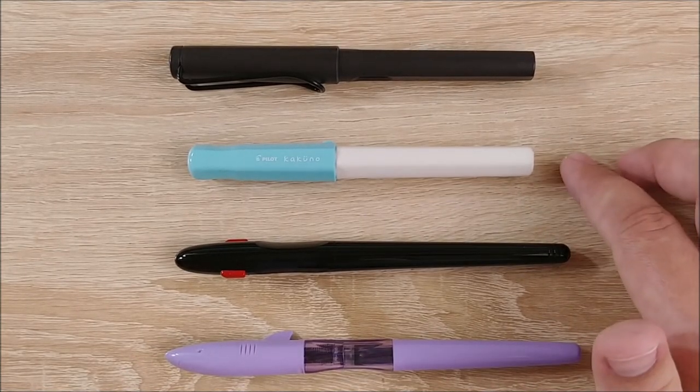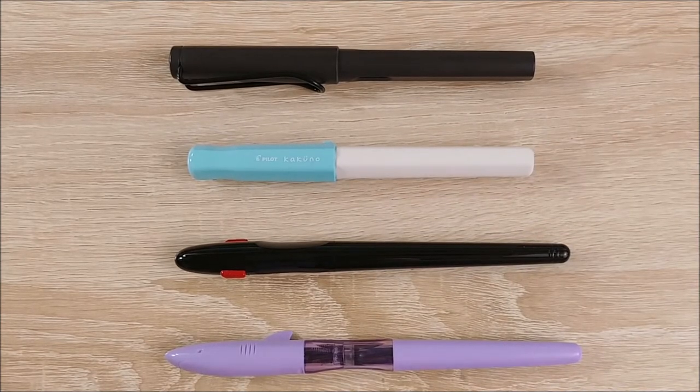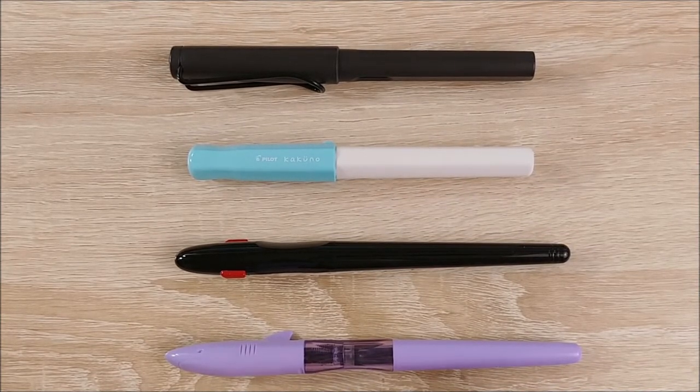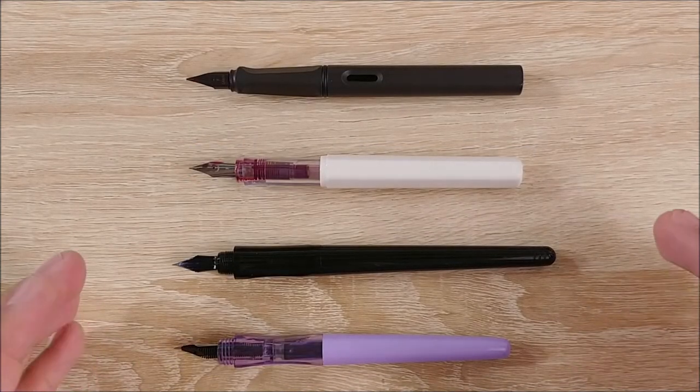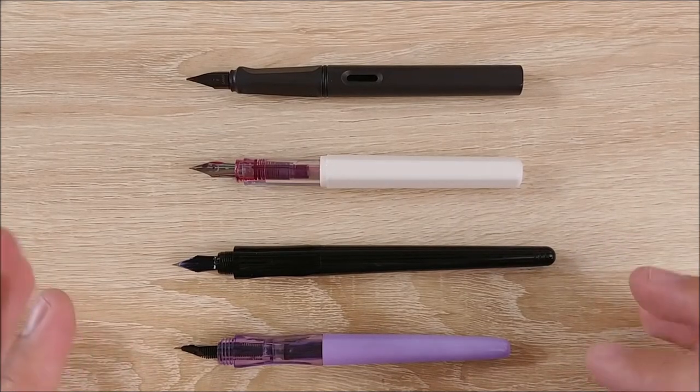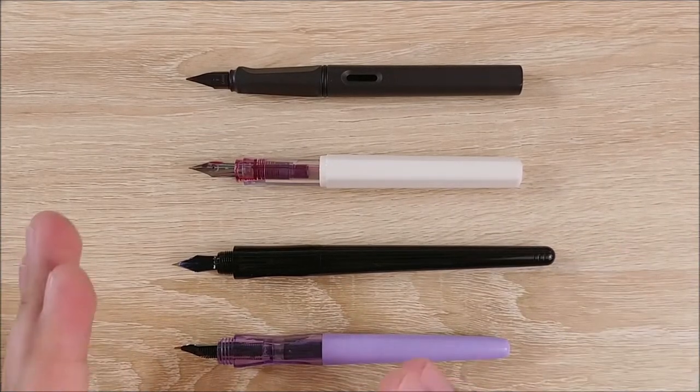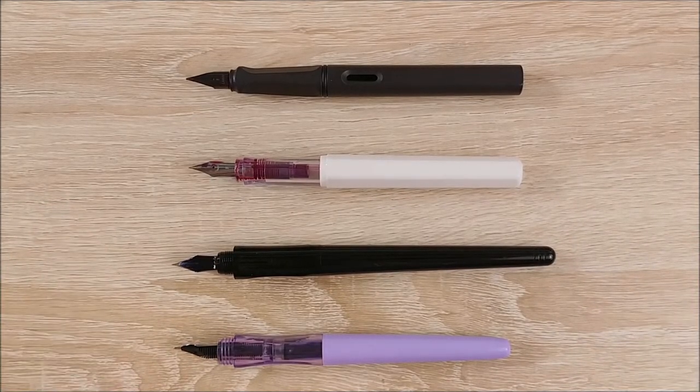And then we have the Pilot Kakuno. This is another children's pen, and then Lamy Safari's kind of entry level. So you can see it's actually longer than every single one of these. Capped, this is a very long pen. Now with the pen uncapped, you can see it comes a little bit closer to the Kakuno slash Safari size. It's definitely shorter than the Penmanship, and it kind of stays consistent in the same size throughout, including the posting, so I won't put that in here.